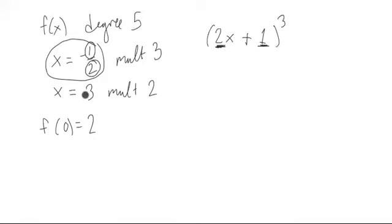Then right here, this next part, x equals 3, we think of a factor that when we plug in 3, we'd get 0. Well, x minus 3, and the multiplicity of 2, there would be a 2. And we're almost done.